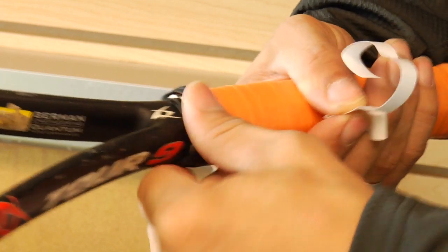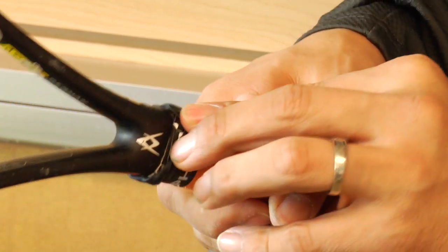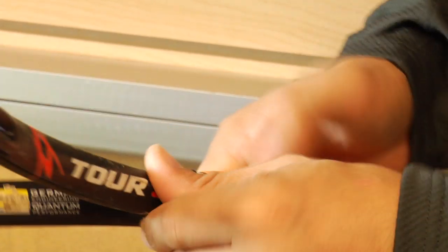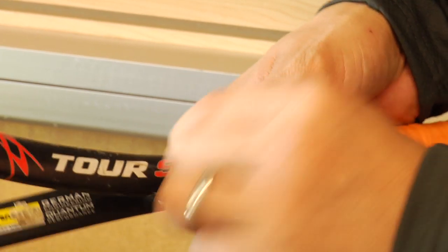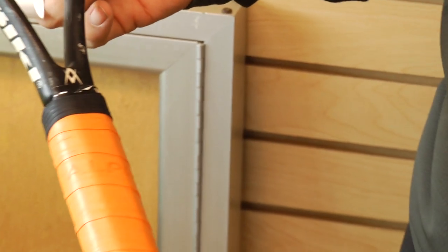After you're finished with that, a lot of rackets have a little rubber ring around the top and you can just replace that over if you want. It's not necessary. It's mainly just for looks. And this is a new replacement grip.